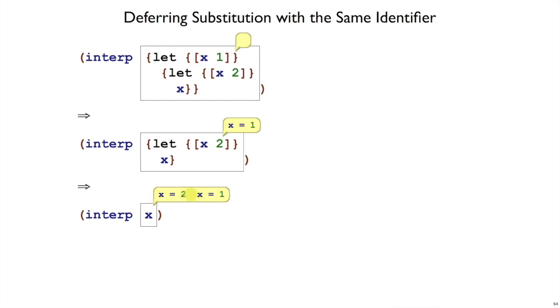So our lookup for x should find 2 here. We need to pick a representation of substitutions and a search strategy that finds the right one. And that search strategy is easy. It's always add to the start of the list and always check from the start.